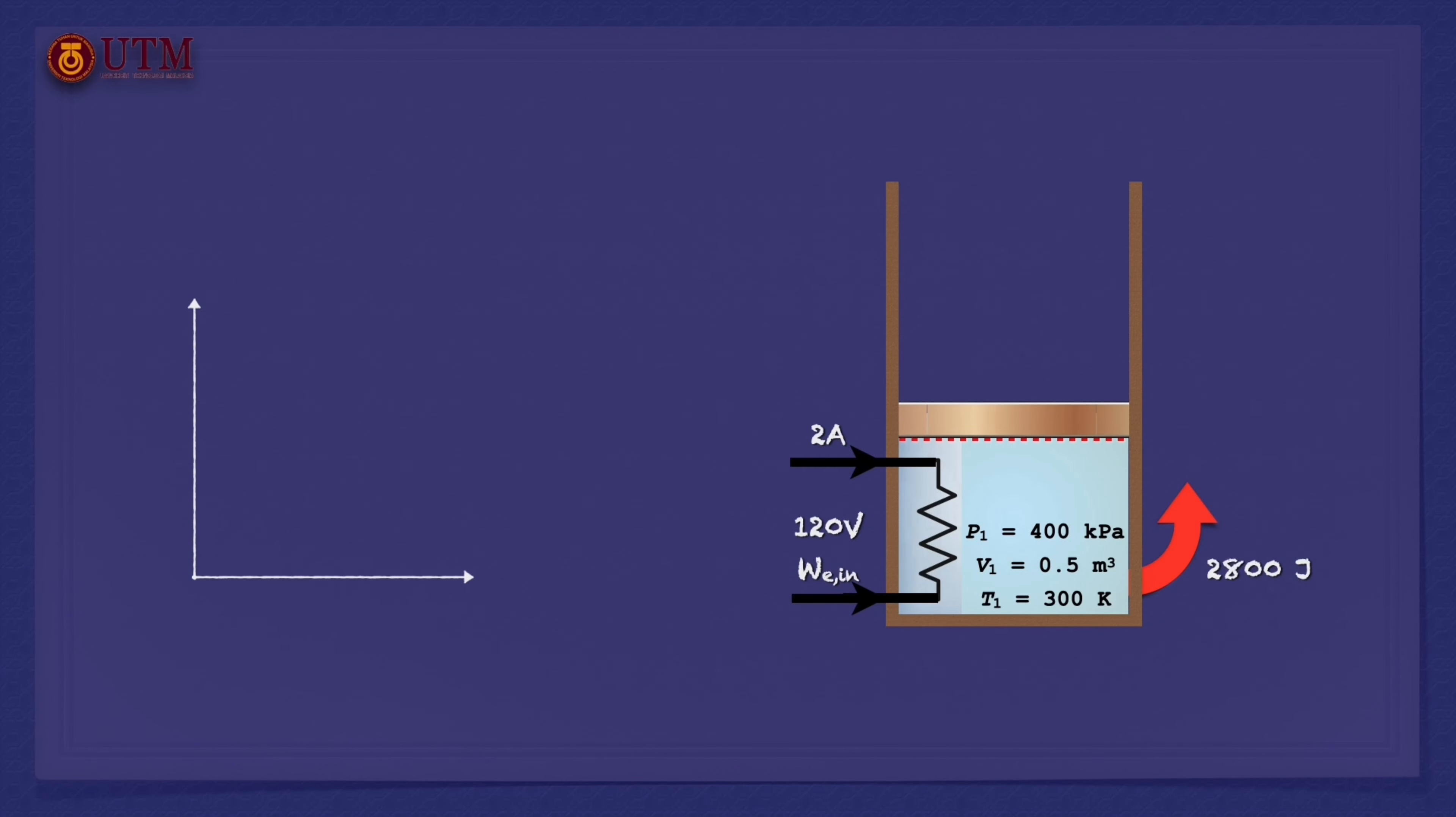Once the nitrogen's final volume is determined, the process curve can be sketched on a PV diagram as demonstrated.